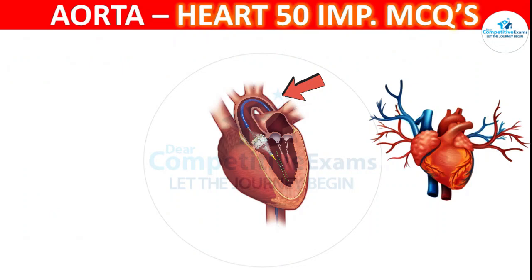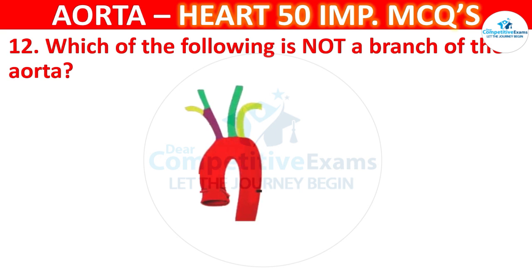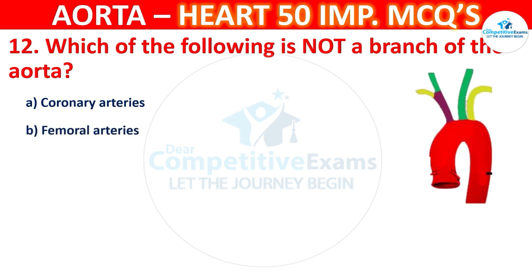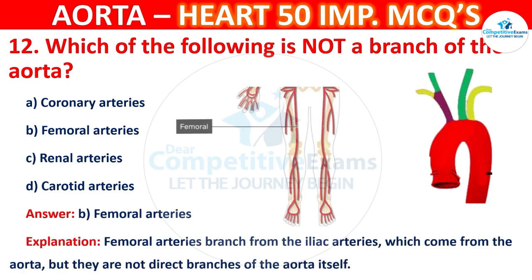Question number 12: Which of the following is not a branch of the aorta? Options are coronary arteries, femoral arteries, renal arteries, or carotid arteries. The correct answer is B — femoral arteries. Femoral arteries branch from the iliac arteries, which come from the aorta, but they are not direct branches of the aorta itself.